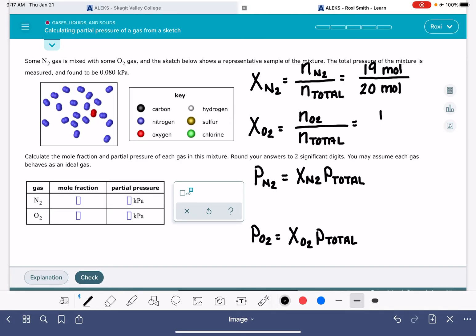For oxygen, one mole of oxygen over a total of 20 moles. Sometimes it's appropriate to leave partial pressure in fraction format. In this problem, it's telling us to round to two significant digits, so we need to calculate this out. The mole fraction of N2 is 0.95 and the mole fraction of O2 is 0.050 to two significant figures.